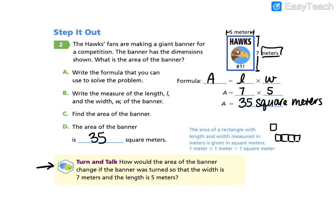So let's look at this last question here. How would the area of the banner change if the banner was turned so the width is 7 meters and the length is 5 meters? If it was this way. Would it change? It would not change. Right? This is like our commutative property. 7 times 5 is equal to 5 times 7. So the area will remain the same even if we rotate the shape.